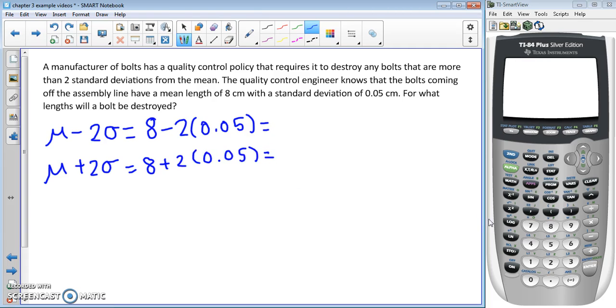Let's do that in our calculator. We're going to do eight minus two parenthesis point zero five close parenthesis enter. That's seven point nine, and then I can just do second enter and pull what I just typed in my calculator.